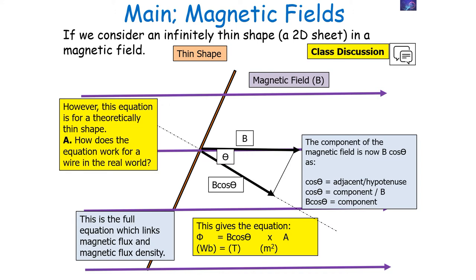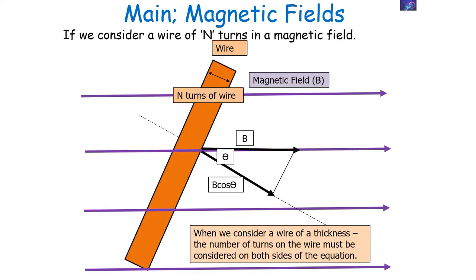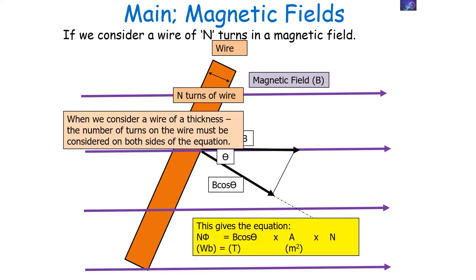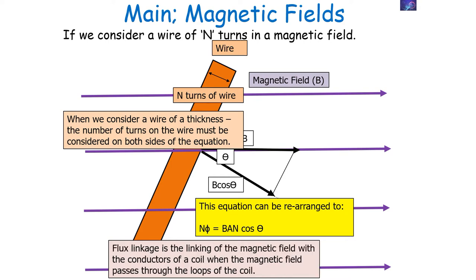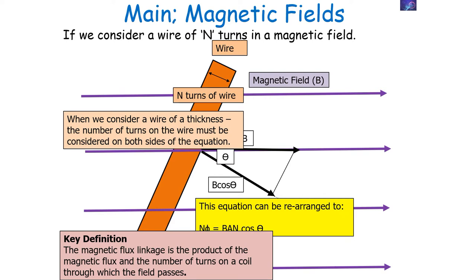In the real world, we live in 3D, so we must also consider the thickness of the wire — it is not infinitely thin. We consider the number of turns on the wire on both sides of the equation, so it becomes N phi equals B cos theta times A times N, where N is the number of turns of wire in the magnetic field. We can rearrange to N phi equals BAN cos theta. We call N phi the flux linkage — it is the linking of the magnetic field with the conductor when the field passes through the loops of the coil. Magnetic flux linkage is the product of the magnetic flux and the number of turns on a coil through which the field passes.